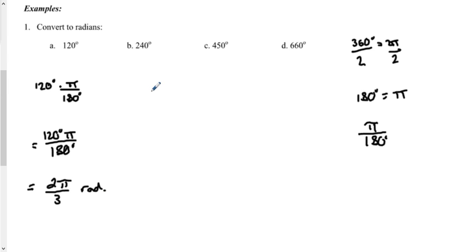We'll use that same conversion factor for 240. We have 240 times pi over 180. Moving to the final step in this case, because we know that 240 and 180 are both divisible by 60, I would have 4 pi over 3 radians.